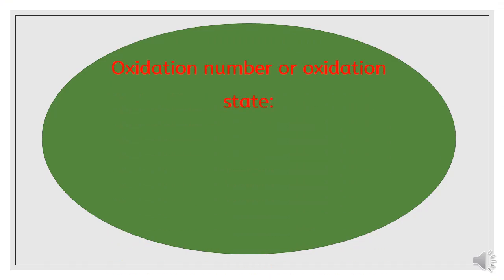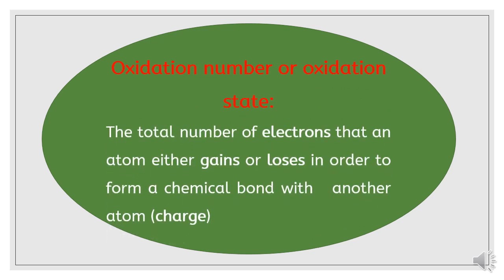Oxidation number or oxidation state can be defined as the total number of electrons that an atom either gains or loses in order to form a chemical bond with another atom, the charge.